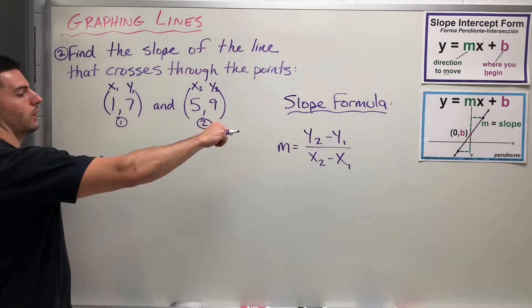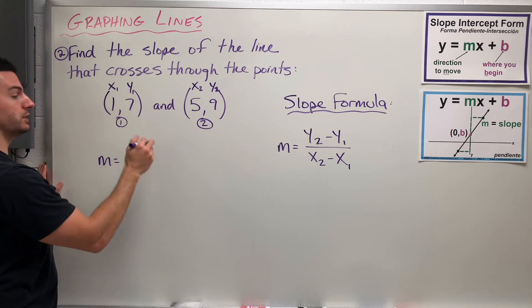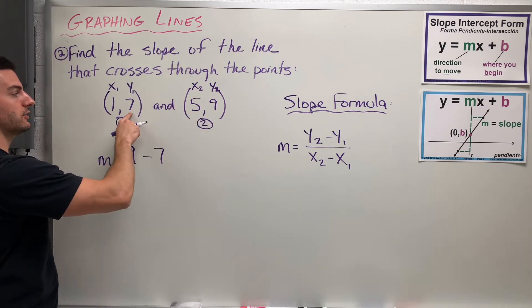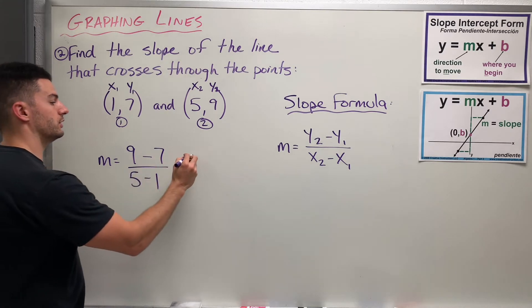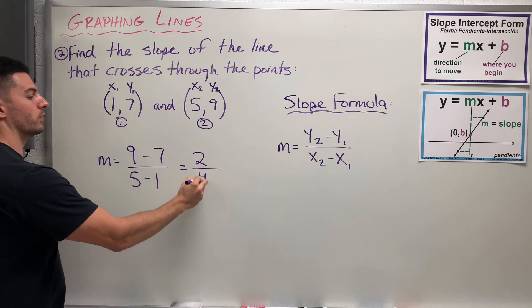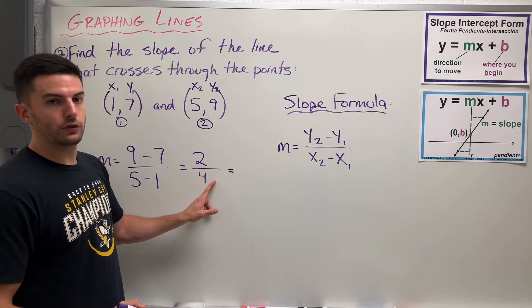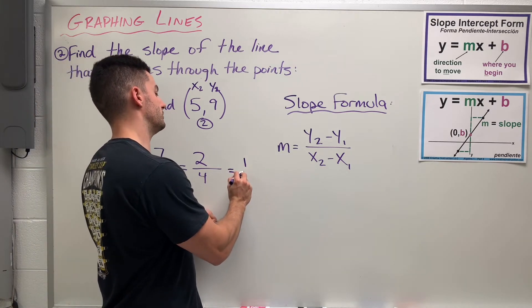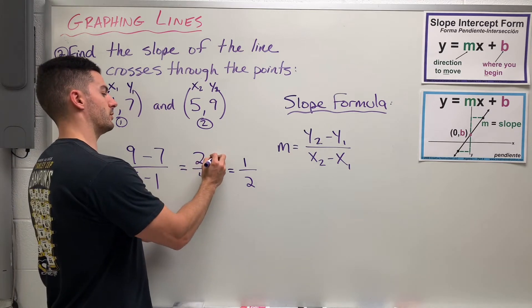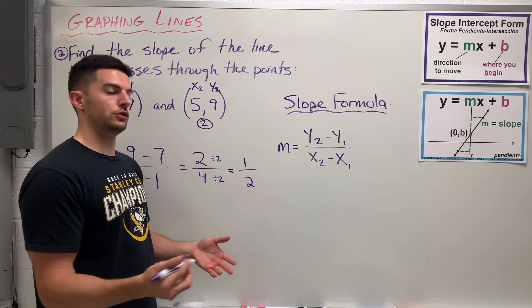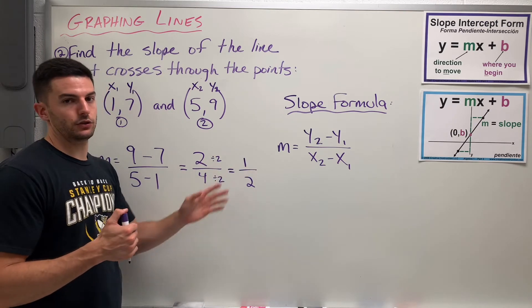So m equals y2 minus y1: my second y value, which is 9, minus my first y value, which is 7 — so 9 minus 7 on top. And then on the bottom, the x values: 5 minus 1. Nine minus 7 is 2, and 5 minus 1 is 4. So 2 over 4 would be my slope. But two-fourths can reduce — if the top and bottom are both even numbers, that's a dead giveaway. Two-fourths reduces to 1 over 2.